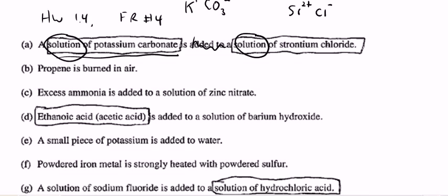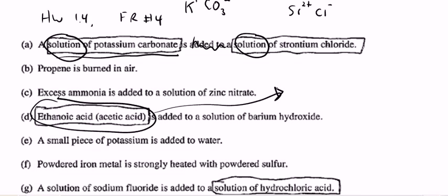Ethanoic acid is added to a solution of barium hydroxide. This is something I have not talked about yet — I have not talked about acids yet. But ethanoic acid is acetic acid. I do not see a water word there. Acetic acid is H⁺ mixed with C₂H₃O₂, and since I do not see a water word, I'm going to just put it together.